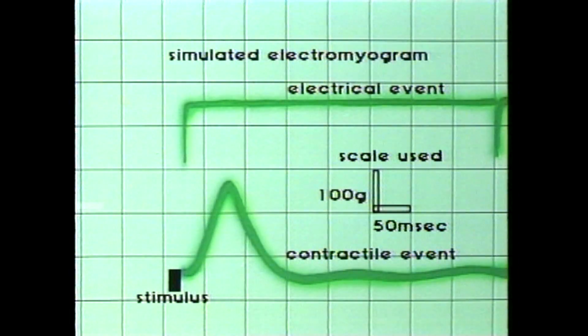The muscle contraction curve shown on screen has a latent period of a few milliseconds, a time to peak tension of 45 milliseconds, and a half relaxation time of 25 milliseconds. The peak twitch tension is equal to 150 grams of tension. The muscle contraction curve in this subject is 100 milliseconds, which indicates a muscle with mixed fiber types.